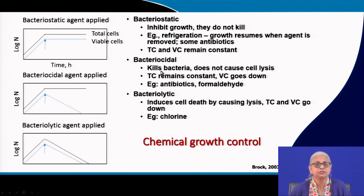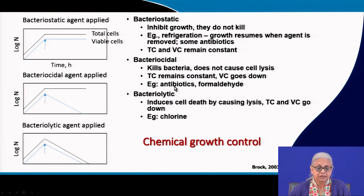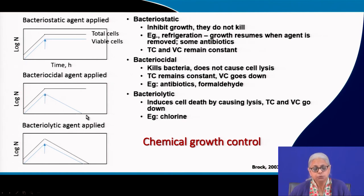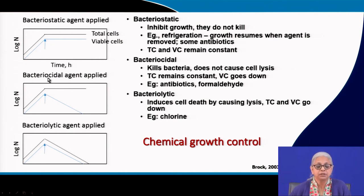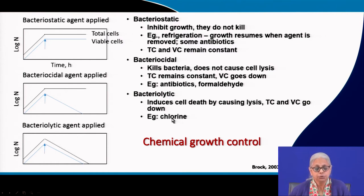Bacteriocidal agents are those that can kill bacteria but do not cause cell lysis. When agents such as antibiotics or formaldehyde are applied, the viable cell concentration will go down but the total cell concentration will remain the same because the cell is intact — dead cells remain part of the total population. When using agents like chlorine or ozone, they damage the cell and cause lysis, so both total cells and viable cells both go down.